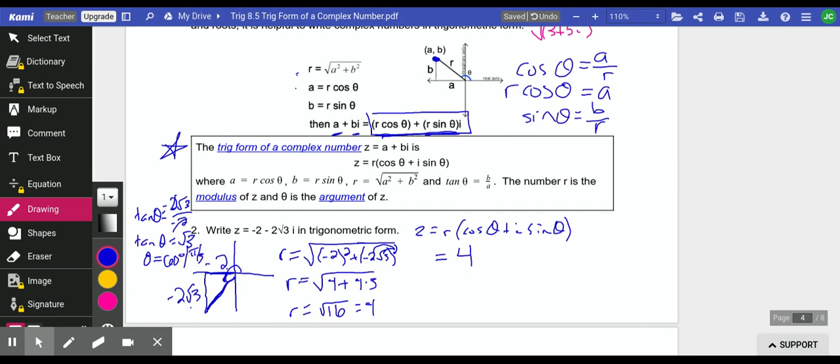But that's in the wrong quadrant. We're in the third quadrant. We need to take 180 plus 60 degrees. So the theta we actually want is 240 degrees in the correct quadrant. And in radians, 4 pi over 3.